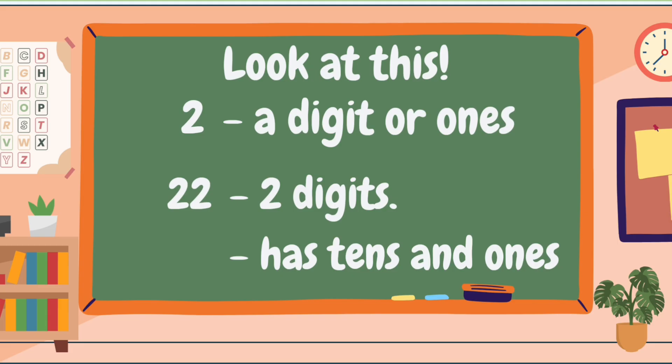Before that, let's see this. We have two numbers: the 2 and 22. The 2 is only a digit — it is also called ones — while 22 is two digits. It has tens and ones. The 2 on the left side is called tens, while the 2 on the right side is called ones. Awesome, right? Math is really interesting.